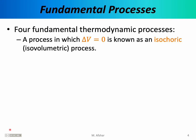The first of these processes is known as an isochoric process. An isochoric process, also sometimes known as an isovolumetric process, is one in which the volume of the gas does not change. So whenever the pressure and the temperature of an ideal gas are manipulated, but its volume is kept fixed, we can say that we have an isochoric process.